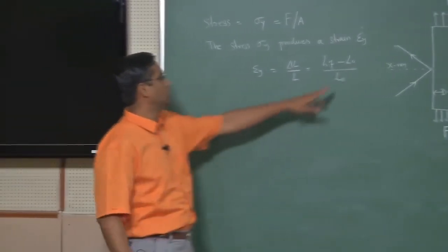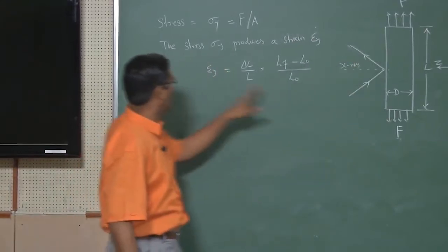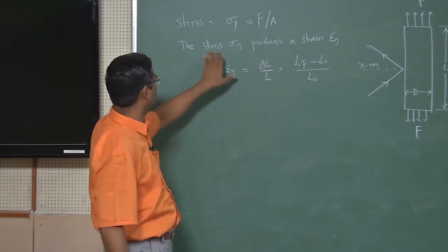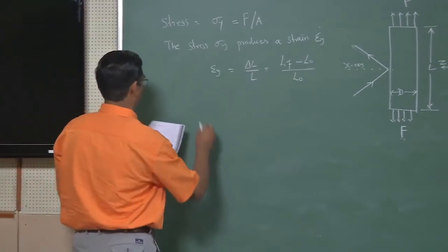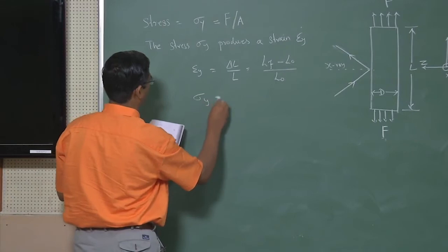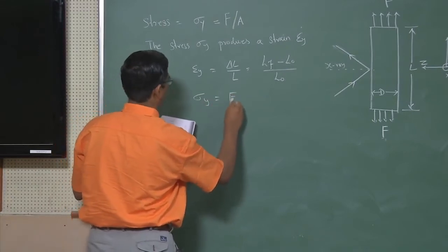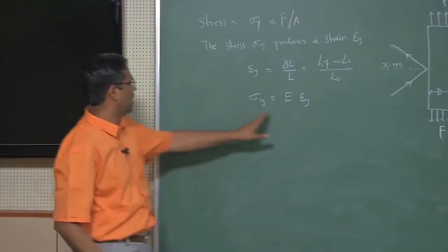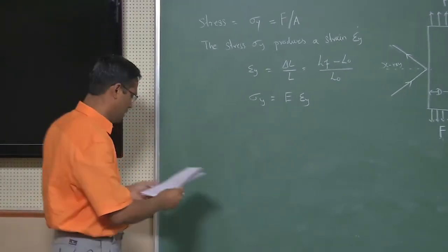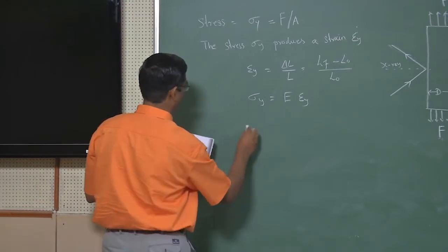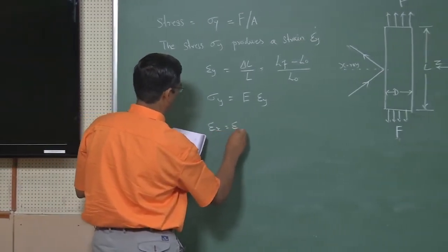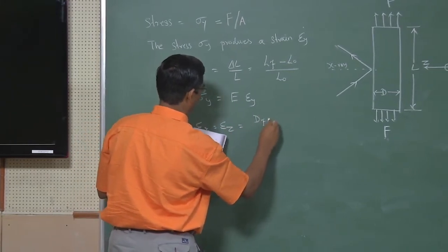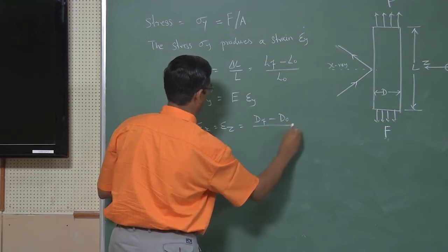This is the original length, this is after you stretch it, and then you get the strain. This strain is related to the stress y. This is the very famous Hooke's law. The stress is related to strain by this relation, and we can also relate epsilon x and epsilon z equals D final minus D initial divided by D naught.